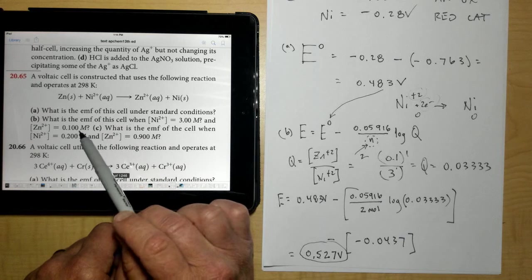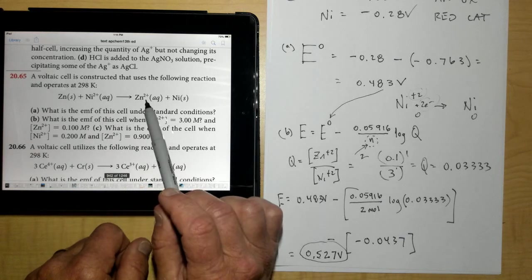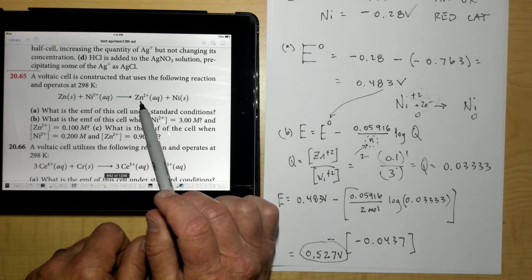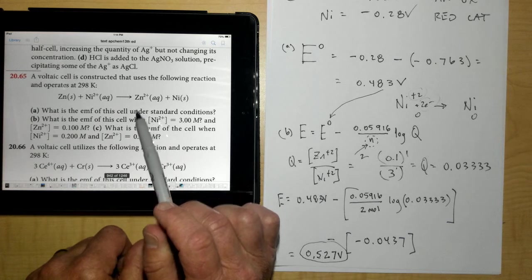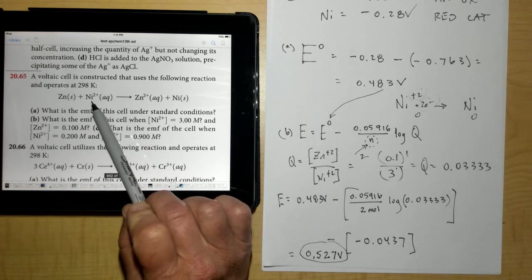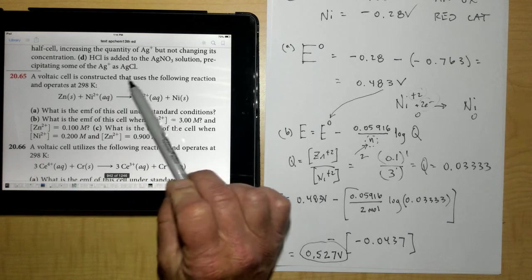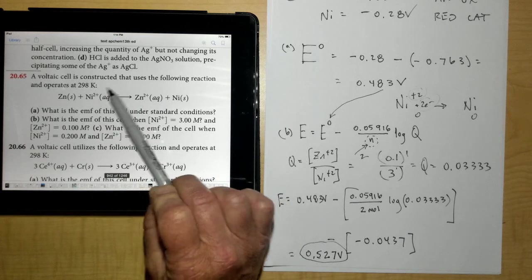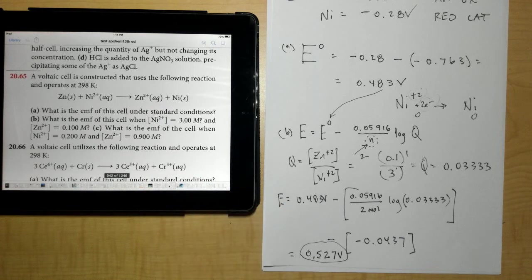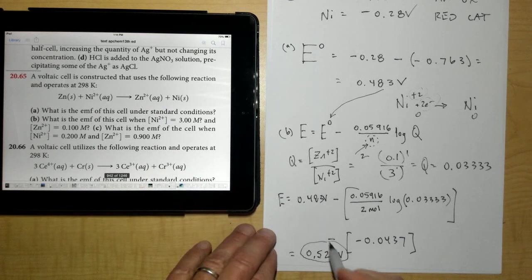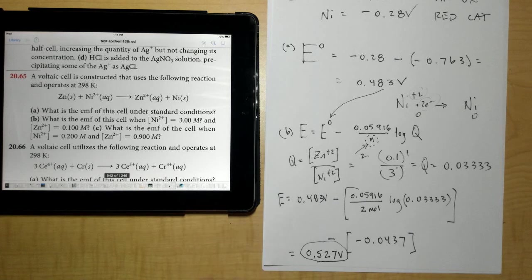The nickel was more concentrated right here than what standard conditions are. Our standard conditions is 1 molar, remember? And the zinc right here is less concentrated. And if you remember back to chapter 15, Le Chatelier's principle says that if you stress the system by increasing the concentration, it will shift to the other side of the reaction. And when it shifts to the other side of the reaction, you're going to shove more electrons that way. And therefore, we're going to increase the voltage.